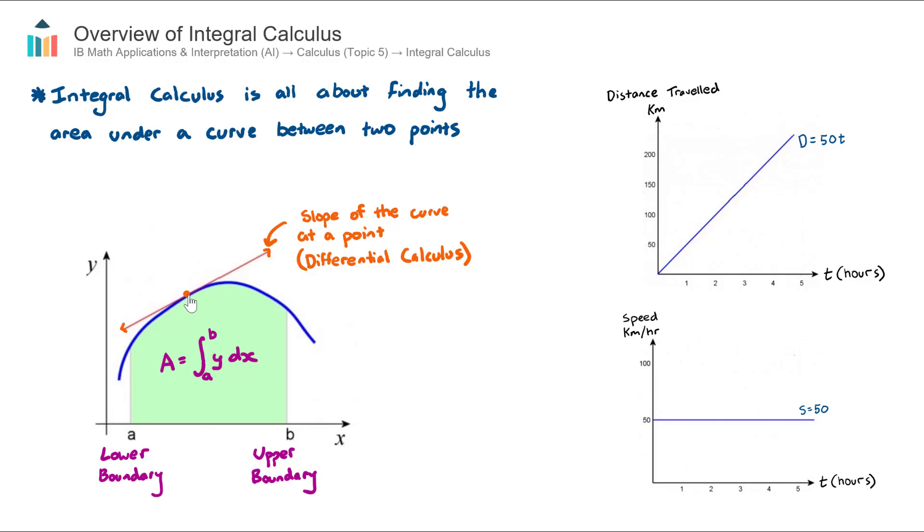And back in differential calculus that was all about finding the slope of this curve at any point. So for example this orange dot here, we could use our knowledge of how to differentiate and then sub in the X value to find the slope of the curve or the gradient of the tangent at that point. So that's what differential calculus is all about.